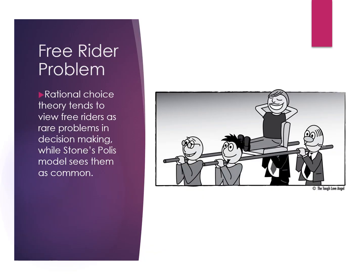Rational choice theory tends to view free riders as rare problems. We talk about the prisoner's dilemma, the chicken game, stalemates, and stag hunts — these are specific examples of when individual best interest and collective best interest are not the same. But we know that quite often there are very few goods where one person's overuse won't cause harm to others. The tragedy of the commons is a very famous collective action problem, where a few people determine they can do better by overusing a resource that's essentially free to everyone, and if a few people overuse it, it will run out for others.